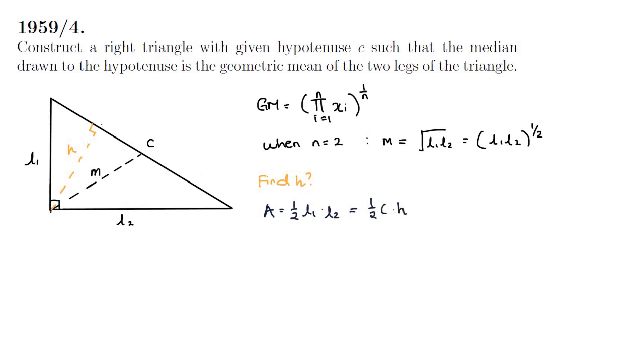It can also be expressed as half c times h which is using h as the altitude of the triangle and c the hypotenuse as the base. We also know that m is equal to the square root of l1 l2 so l1 l2 is m squared. Substituting that in we have half m squared is equal to half c times h.